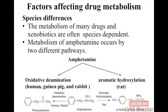Species differences also affect drug metabolism. The metabolism of many drugs and xenobiotics is often species dependent. For example, metabolism of amphetamine occurs by two different pathways: oxidative deamination and aromatic hydroxylation. Humans, guinea pigs, and rabbits follow oxidative deamination, whereas rats follow the aromatic hydroxylation process.